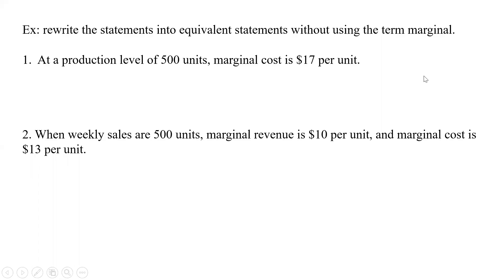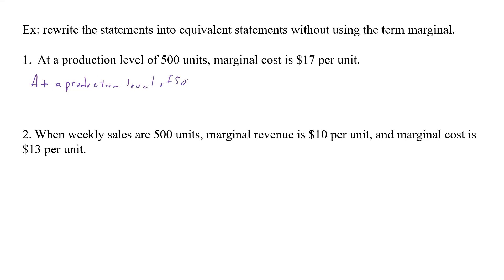In these first examples, we're supposed to rewrite the statements into equivalent statements without using the term 'marginal.' Marginal cost, marginal revenue, or marginal profit refers to the change. So when we convert from marginal cost, at a production level of 500 units, instead of marginal cost, we say the cost is increasing by $17 per unit.